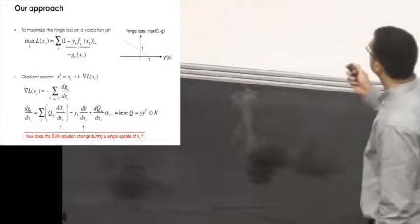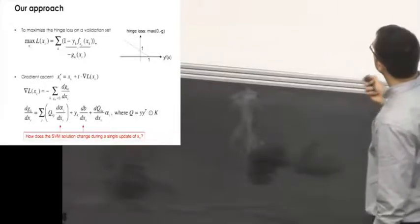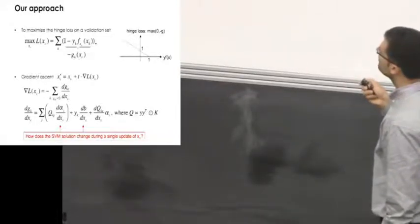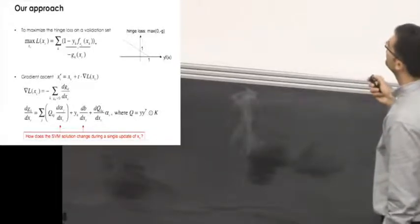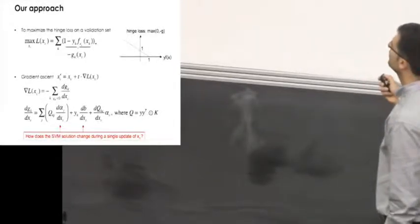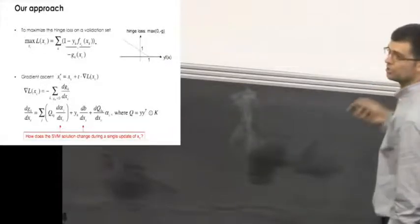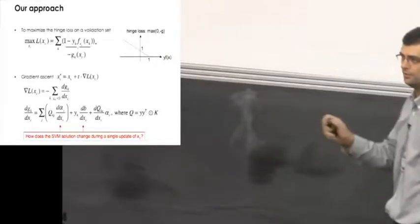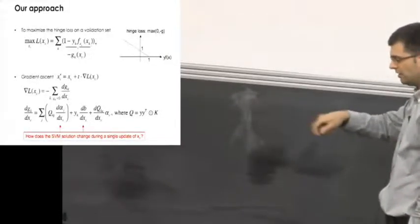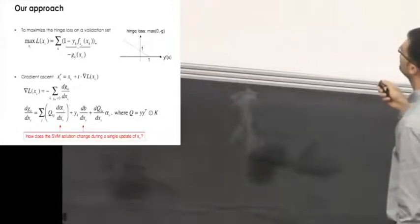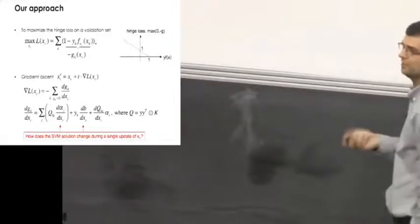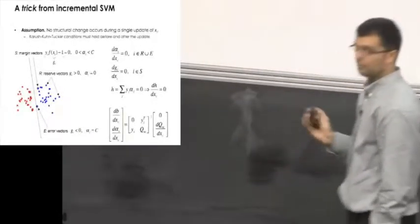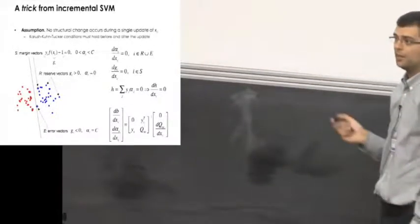Without going too much into details, as we don't have much time, what we notice here is that to be able to compute this function in closed form analytically, we must understand how the SVM solution changes when we slightly perturb the xc point into the training data. While we're basically shifting xc into the training set, we want to know how the alpha values and the bias of the SVM change. To solve this problem, we resort to a trick which is quite common in incremental SVM.